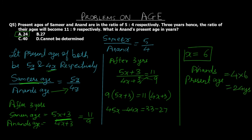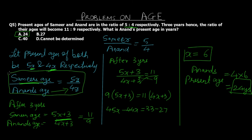Option A (24 years) is the final answer. This question involved ratios — we assumed ages as 5x and 4x with a common multiplying factor. From the new ratio after 3 years (5x+3 upon 4x+3 equals 11/9), we formed an equation, solved for x equals 6, and multiplied by 4 to get Anand's present age. Similarly, Samir's age could be found by multiplying x by 5.